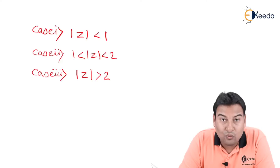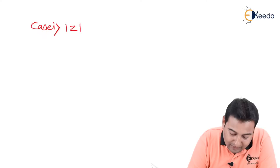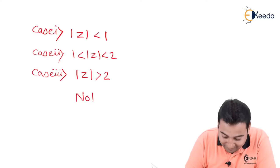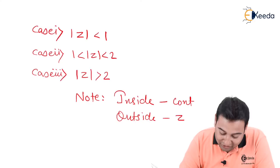Now I'll explain how to solve Laurent and Taylor series for all three cases. Remember this important note: if the point is inside a circle, take the constant common; if the point is outside a circle, take z common. Fix this in your mind — it makes the topic very simple.